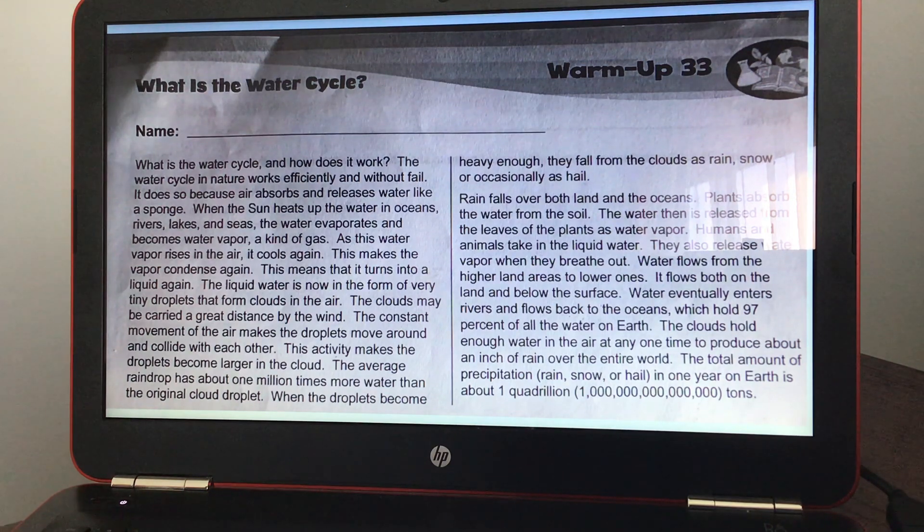The clouds may be carried a great distance by the wind. The constant movement of the air makes the droplets move around and collide with each other. This activity makes the droplets become larger in the cloud. The average raindrop has about one million times more water than the original cloud droplet.